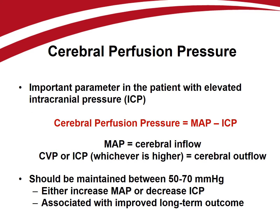Perfusion of the brain is an important parameter in the patient with traumatic brain injury or elevated intracranial pressure. Mean arterial pressure is the inflow pressure to the brain, while central venous pressure or intracranial pressure — whichever is higher — is the outflow pressure. Cerebral perfusion pressure is therefore mean arterial pressure minus intracranial pressure, and should be maintained between 50 and 70 mmHg. This can be achieved by increasing mean arterial pressure using fluids or vasopressors, or decreasing intracranial pressure with hypertonic fluids, osmotic diuretics, ventricular drainage, or decompressive craniectomy. Maintaining adequate cerebral perfusion pressures is associated with improved long-term patient outcome.